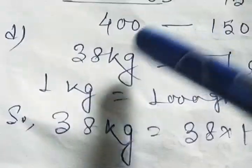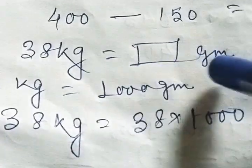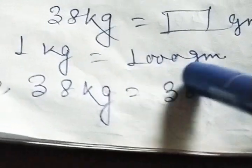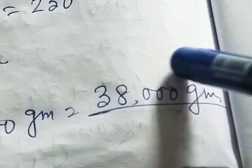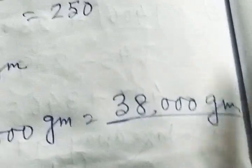Next, 38 kg equal to how much grams? So 1 kg equal to 1000 grams. Same way, 38 kg equal to 38 multiply by 1000 grams. So answer will be 38,000 grams.